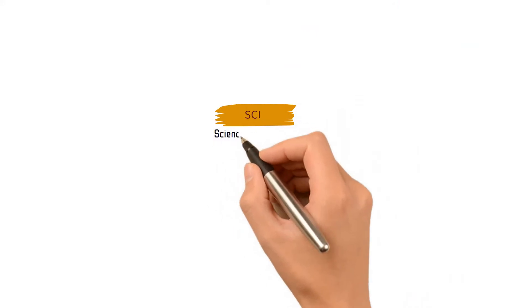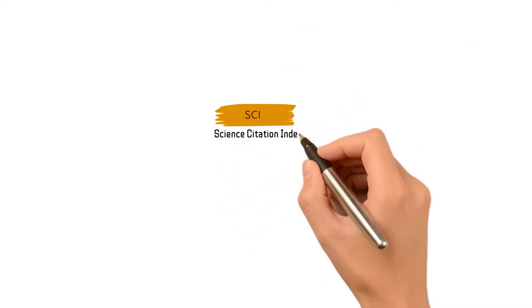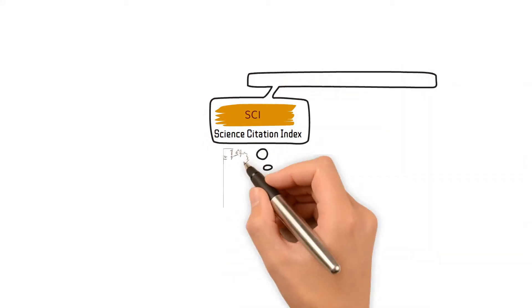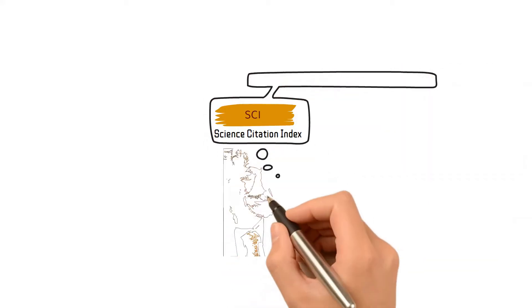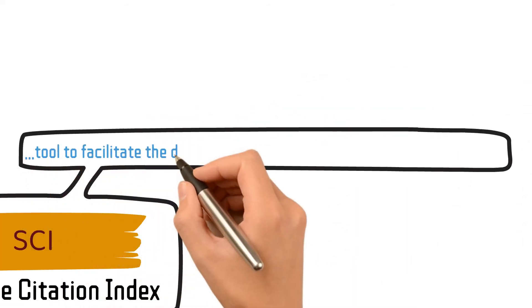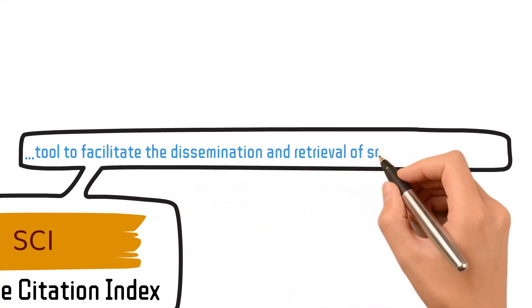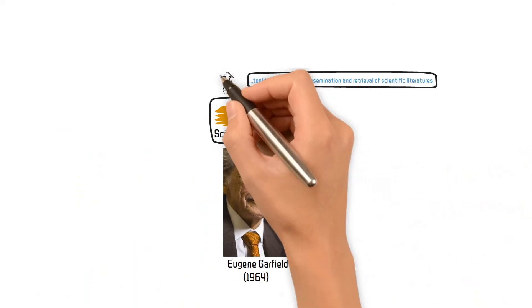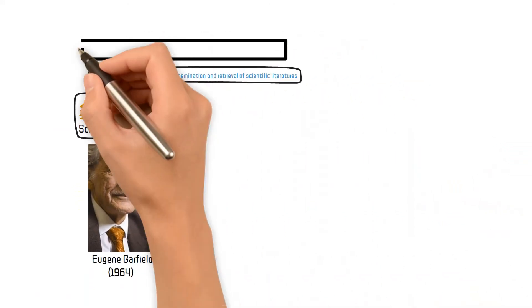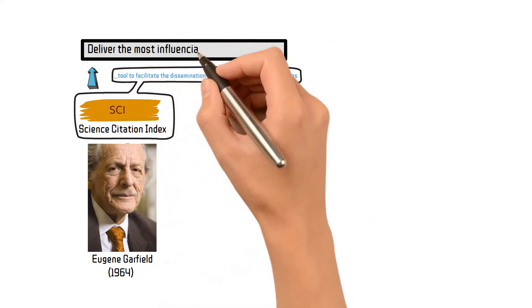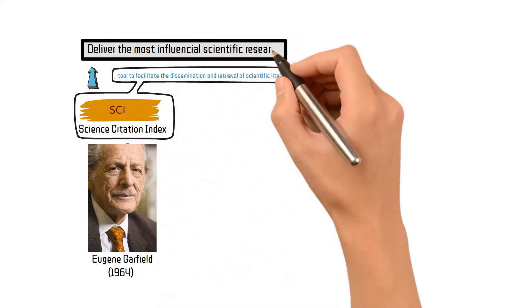SCI stands for Science Citation Index. This index was originally created by Eugene Garfield in 1964. The main idea was to create an up-to-date tool to facilitate the dissemination and retrieval of scientific literature. So, SCI actually aims at delivering the most influential scientific research through platforms like Web of Science.